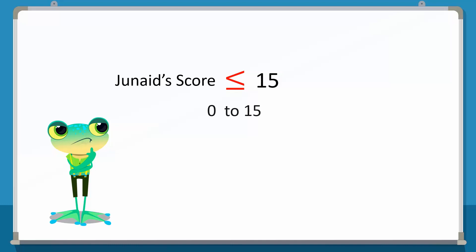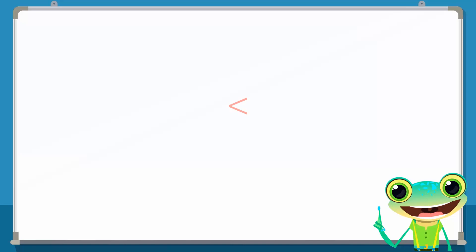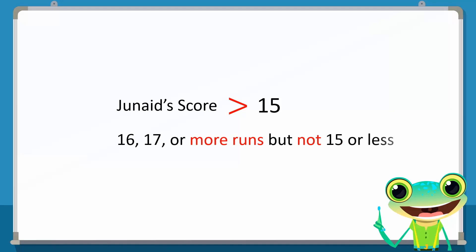How do we show this mathematically if a number is greater than another number? To show that a number is greater than another number, we simply reverse the less than symbol. In the example, Junaid's score is greater than 15, which means Junaid can score 16, 17 or more runs, but not 15 and less.